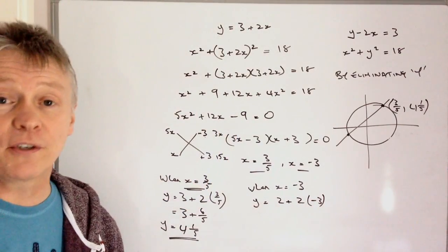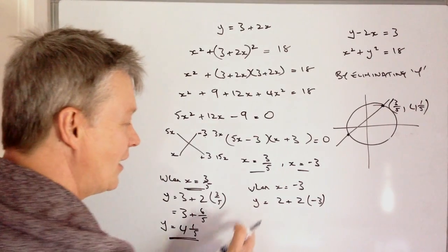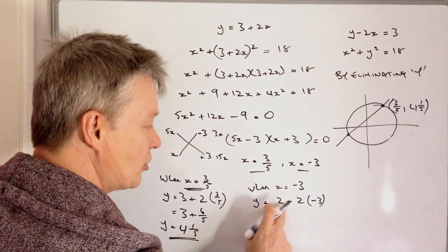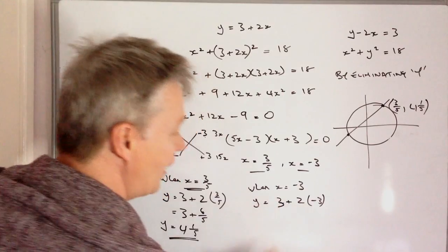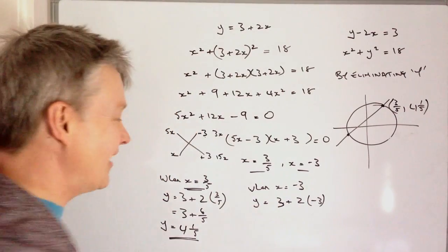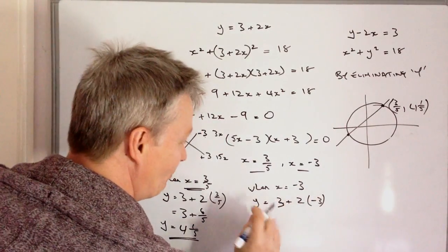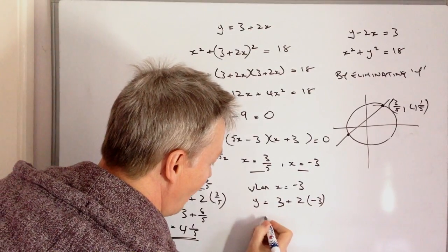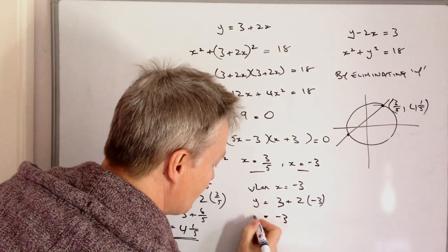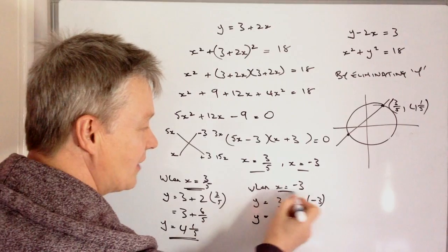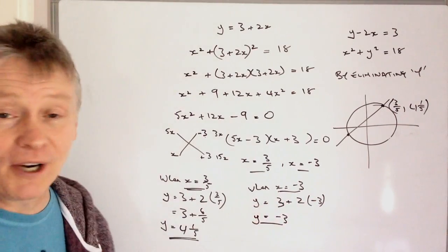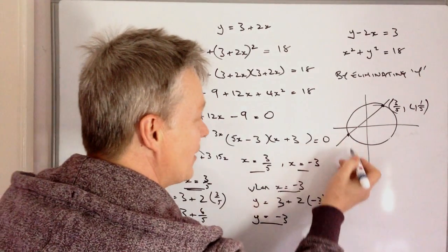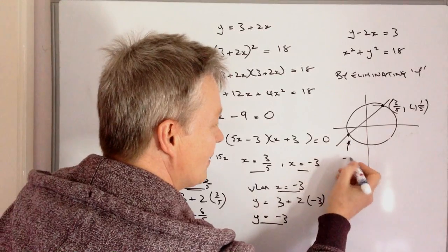Okay, well 2 times minus 3 is minus 6, so y equals 3 minus 6, which is minus 3.